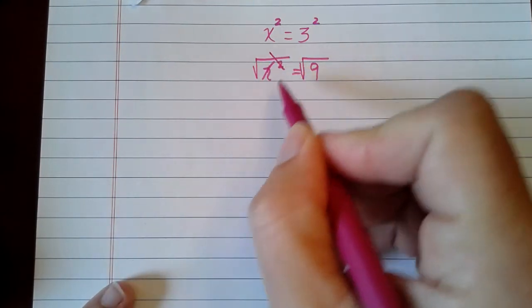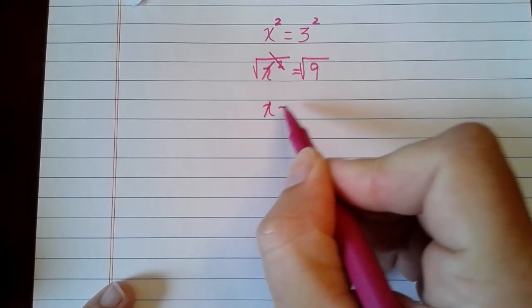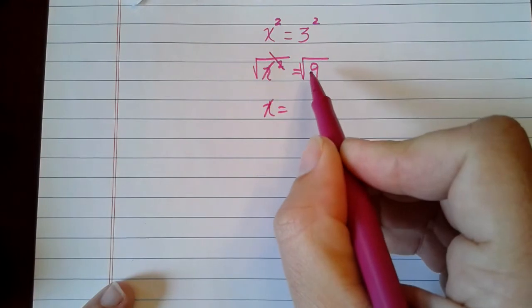The square root and the x squared cancel each other out, so I'm left again with x equals the square root of 9.